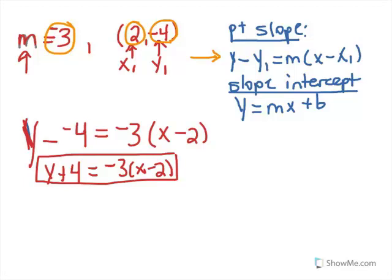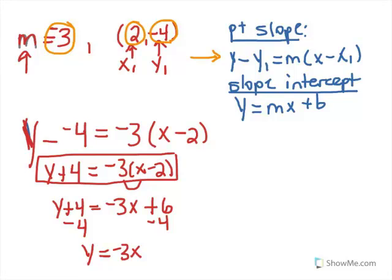So y plus 4 would be equal to negative 3 times x is negative 3x, and then negative 3 times negative 2 is plus 6. Now subtracting 4 from both sides gives me y is equal to negative 3x plus 2, because 6 minus 4 is 2. And there's your slope-intercept.